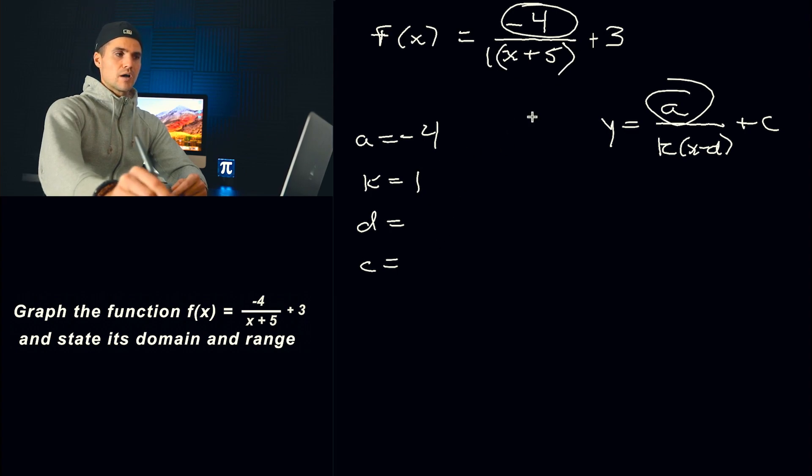So the k value is just going to be 1. The d value is going to be negative 5. Remember, it's always the opposite sign. So it's like x minus negative 5, which is like x plus 5. And then the c value is positive 3, like that.